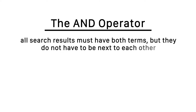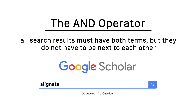The next operator is the AND operator. When you put AND between two different search terms, it will let the database know only to return articles that include both terms, although they don't have to be right next to each other. You can use this in connection with the grouping operator, but be careful not to put it inside the quotations. A database looks for exact matches of whatever you put inside quotes, so it will treat the AND like any other word.